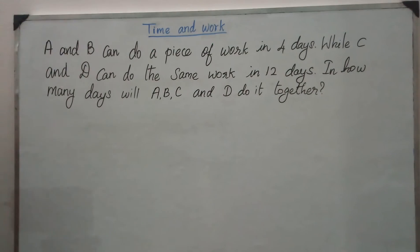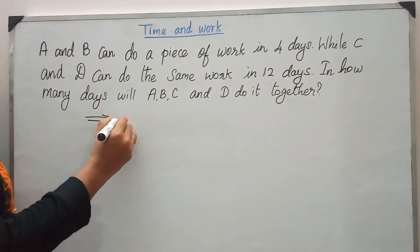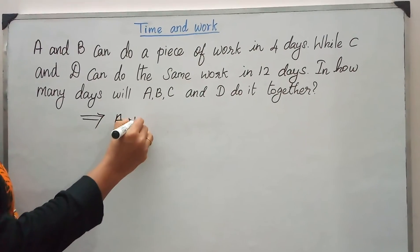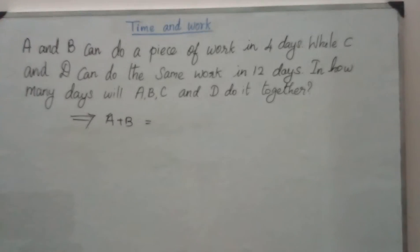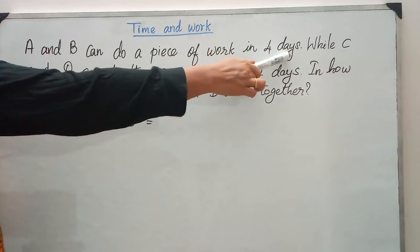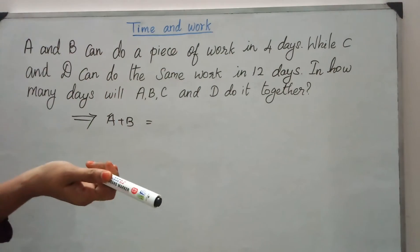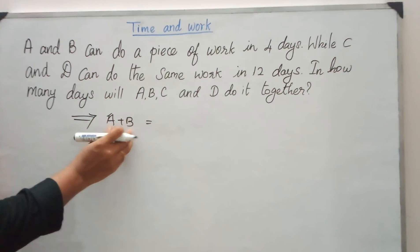So now from the problem, we understand that A plus B can do the work. What is the amount of work done by A and B? Here the days, the time is given. What we have to do? Just inverse it, that's all. So A plus B together can complete 1 by 4 amount of work.